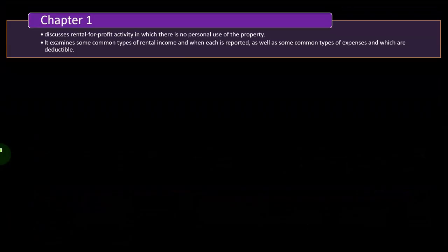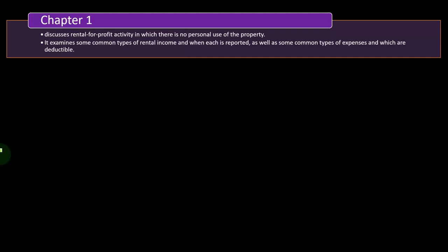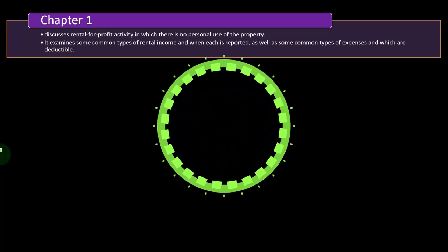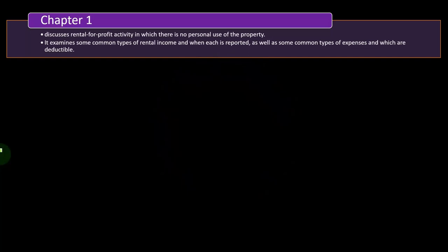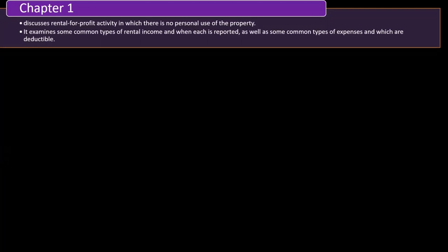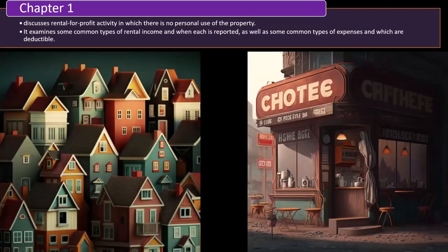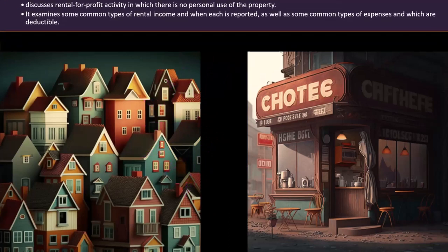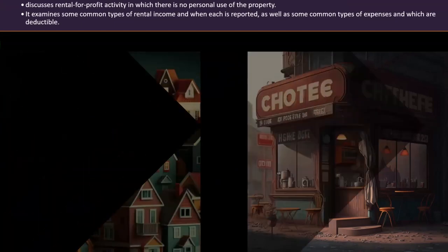You have a similar structure to a Schedule C — it's going to be an income statement, income minus expenses — but then you've got some of these other concepts that come into play. Chapter one discusses rental for-profit activity in which there is no personal use of the property. It examines some common types of rental income and when each is reported, as well as some common types of expenses and which are deductible.